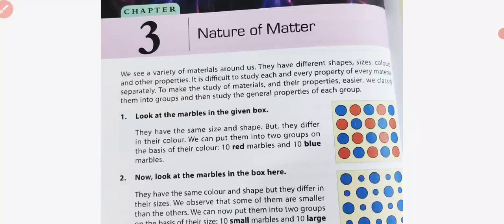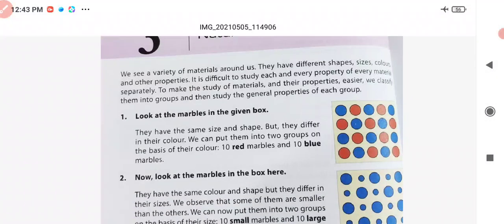We cannot study each material one by one because it is too difficult. To study materials and their properties more easily, we classify them into groups and study the properties of each group on the basis of their similarity and dissimilarity. Some substances in our surroundings have similar properties and some do not, so on that basis we divide them into groups.